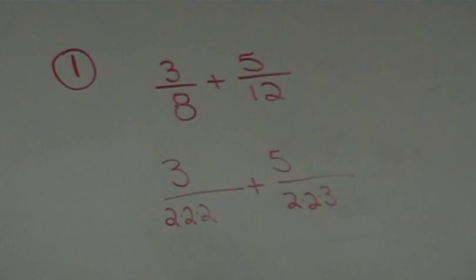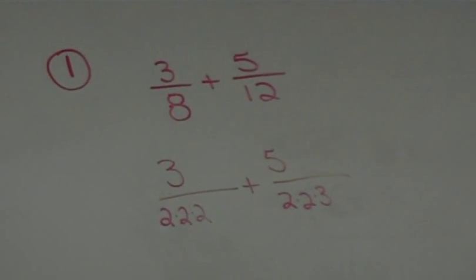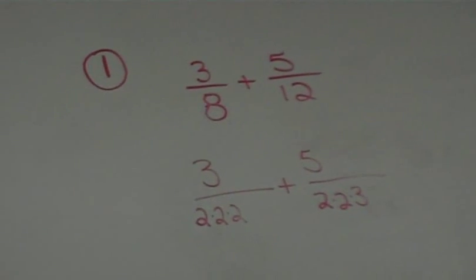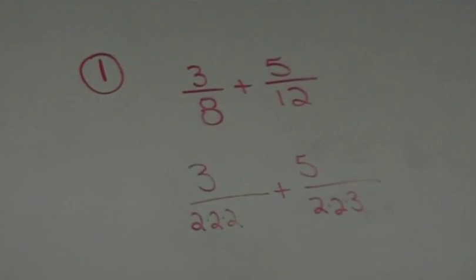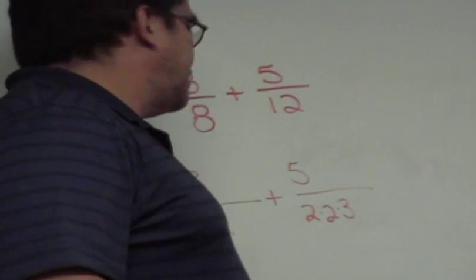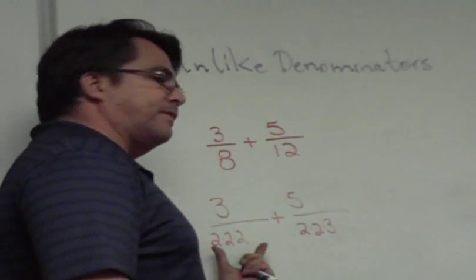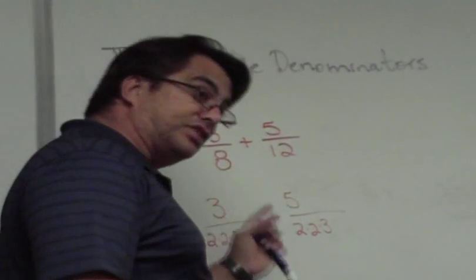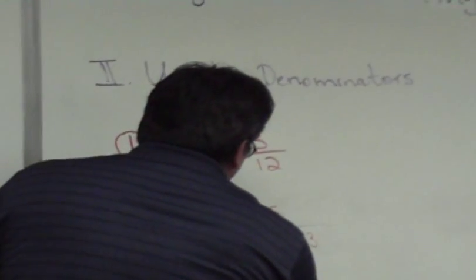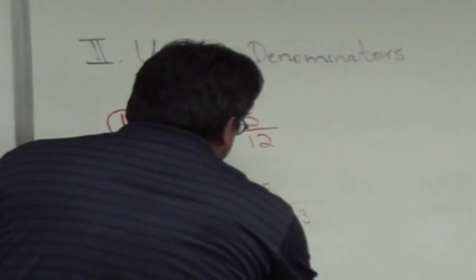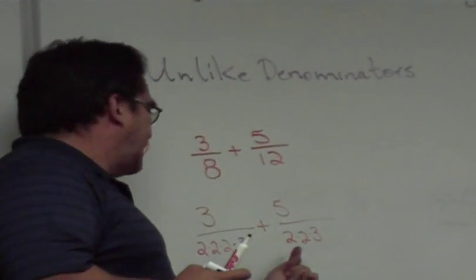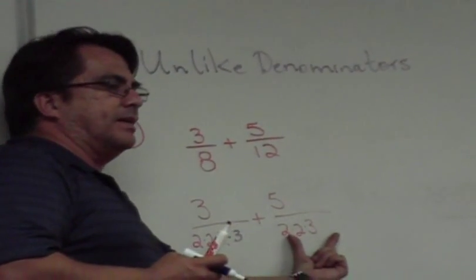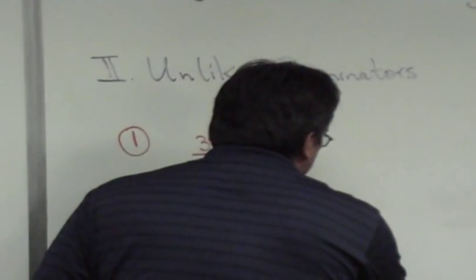Once you've factored your denominators, look and ask yourself: how do we make them identical? We're going to make them identical when the denominators in both fractions have exactly the same factors. I look at this one and say, do I see anything here that's missing from this one? There's a 3 that's missing, so I'm going to multiply this denominator by 3. Are they identical now? No — this one has three 2's, this one has only two 2's. What is this one missing? An extra 2. I would multiply this denominator by 2.